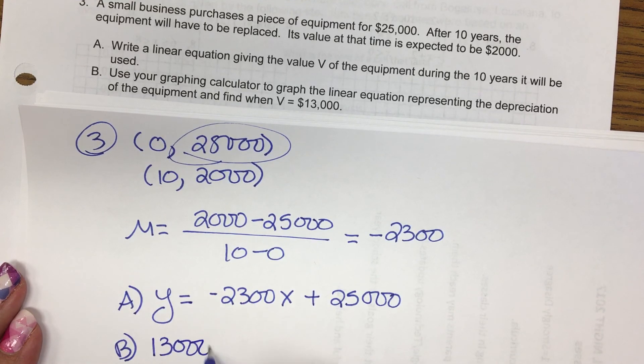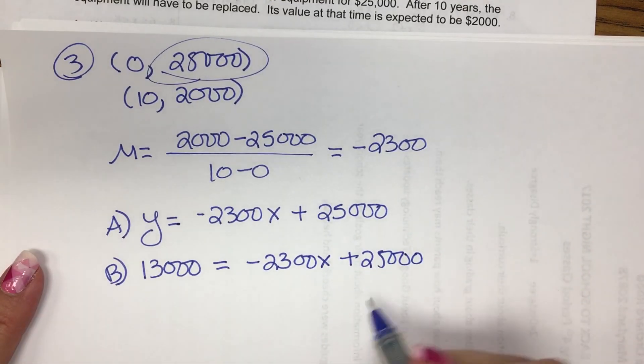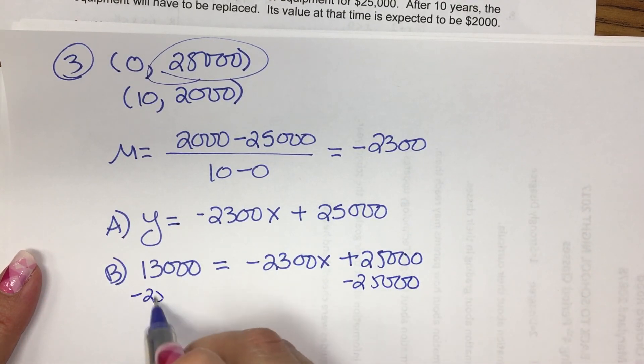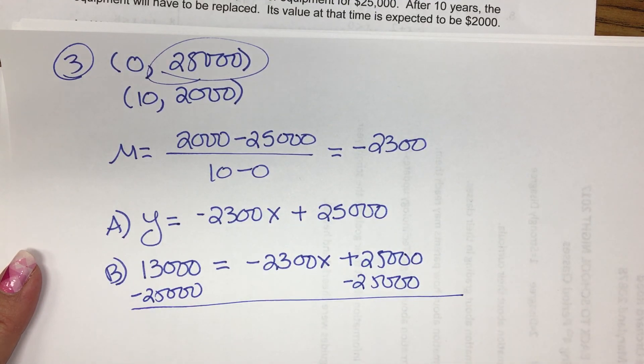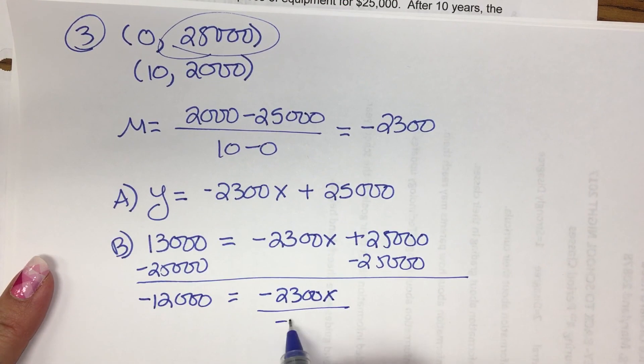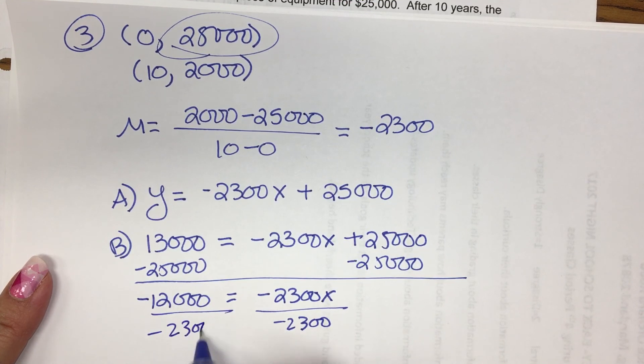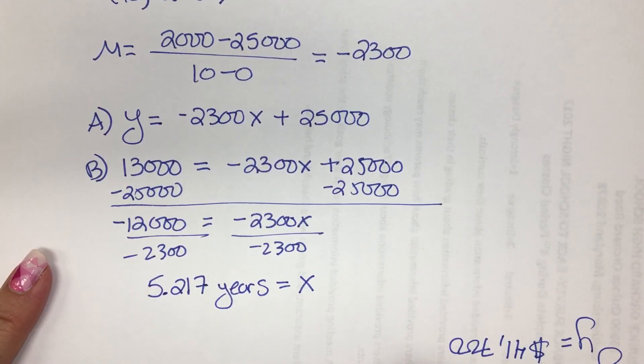So that's the y, not the x. So I put the $13,000 on the left side. Subtract this over. Divide by negative $2,300. So we'll see $12,000 divided by $2,300 gives you 5.217 years for x.